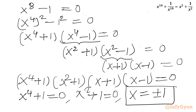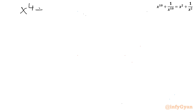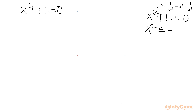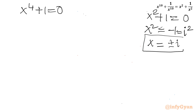Now we will consider the first and second equations: x^4 + 1 = 0 and x^2 + 1 = 0. From x^2 + 1 = 0, we get x^2 = -1, and we know -1 = i^2. Taking square roots of both sides, x = ±i. So two complex solutions are confirmed.